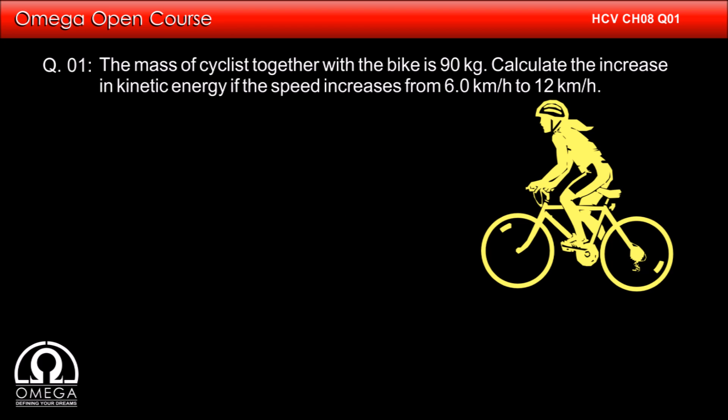The mass of the cyclist together with the bike is 90 kg. Calculate the increase in kinetic energy if the speed increases from 6 km per hour to 12 km per hour.